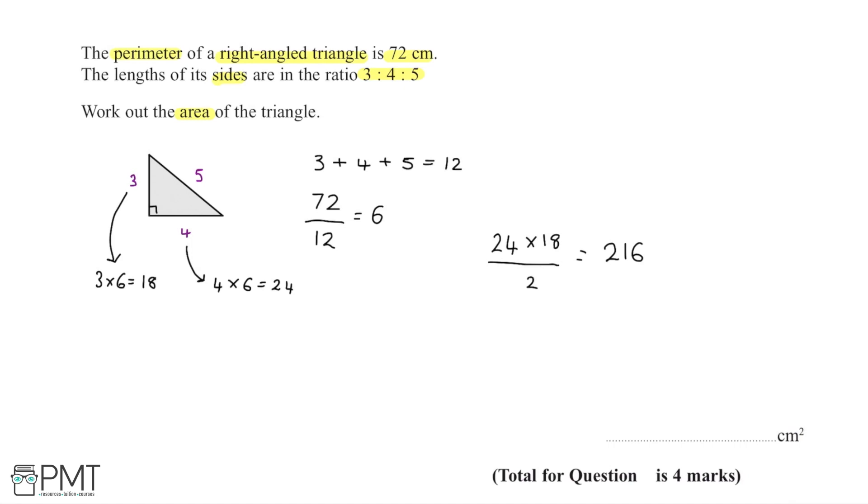For the units, we're working with centimeters squared. Each side length is in centimeters, and multiplying centimeters by centimeters gives us centimeters squared.